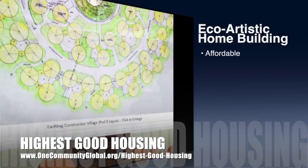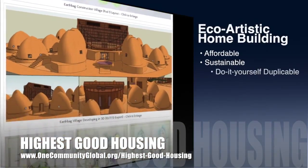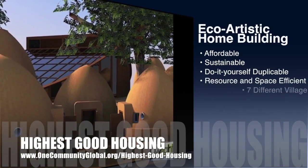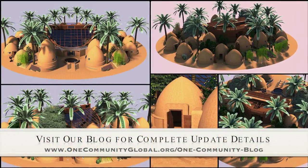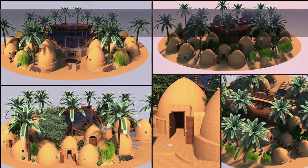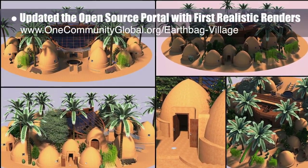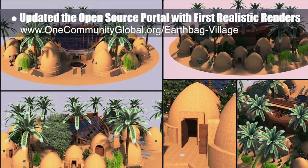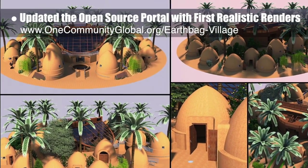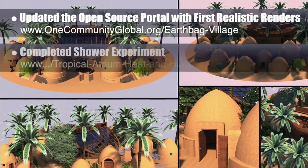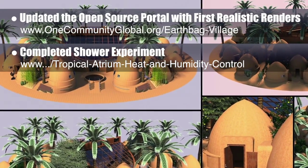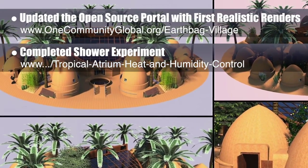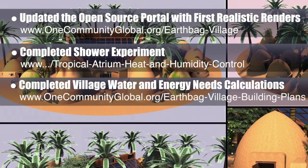OneCommunity's approach to highest good housing is eco-artistic home building that is affordable, sustainable, do-it-yourself duplicable, resource and space efficient, and consists of seven different sustainably constructed village models. This last week, the core team added our first professional EarthBag Village renderings to the EarthBag Village open source portal, showing the complete inner ring of homes, plus tropical atrium, showers and toilet domes, and more. We also completed a shower water experiment to determine expected shower water heat retention for use as an additional heat source for the tropical atrium, and completed detailed water and energy needs calculations for the EarthBag Village.